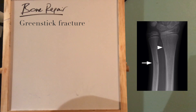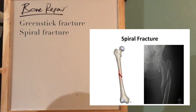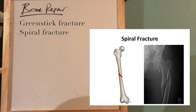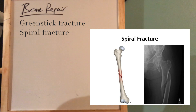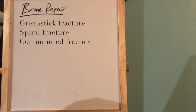Another type of break is called a spiral fracture. This is when a bone experiences twisting forces — like an athlete on a field, a soccer player or a basketball player, when they try to change direction. That causes the bone to twist really violently, which is a hard kind of force for bones to deal with, and it causes a spiral fracture.